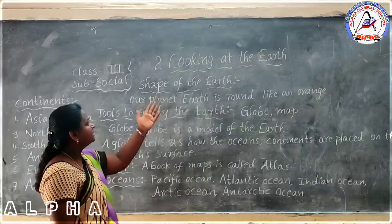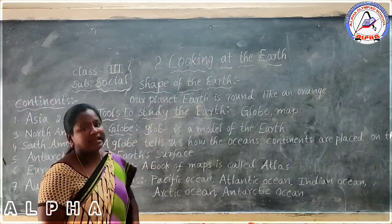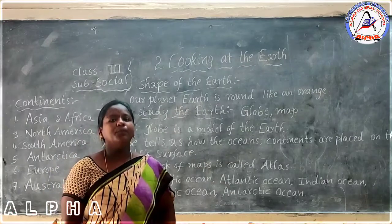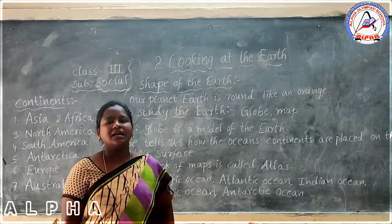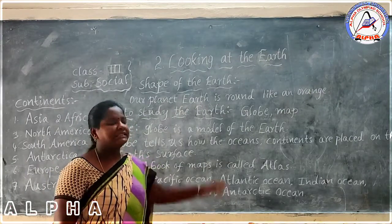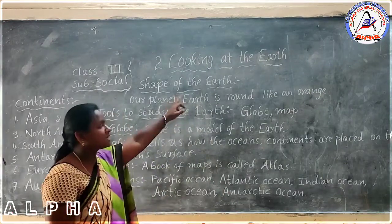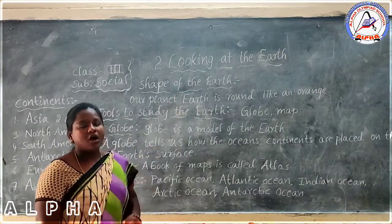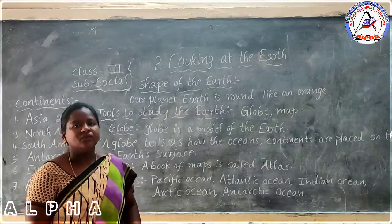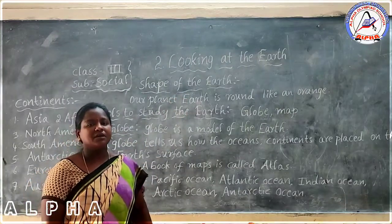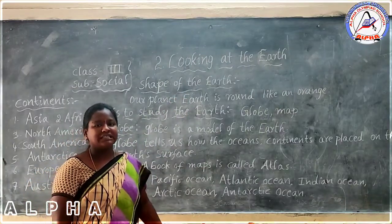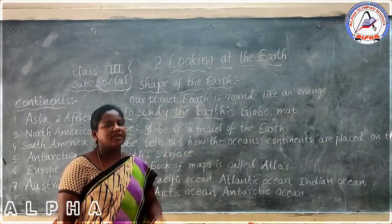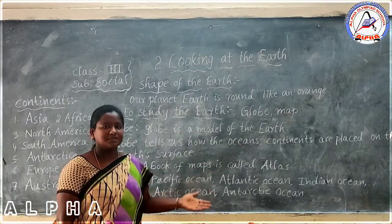On the earth, the planet is in which color? Blue color. So the earth is called the blue planet. On the earth, what do we observe? Water, land, and atmosphere we have observed.